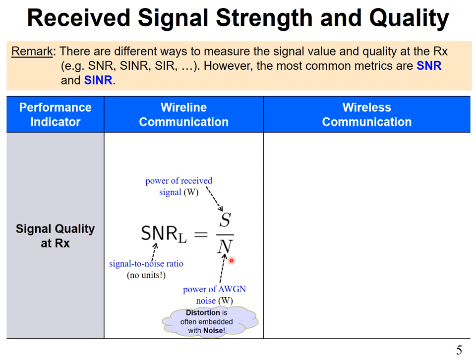An interesting point: distortion is often embedded within the noise term. The distortion introduced by sub-components at the transmitter or receiver — for example, harmonics from a power amplifier — is sometimes modeled as part of the noise N. Similarly, attenuation is embedded in the received signal power S. So the received power already accounts for the power drop due to attenuation in the wire.